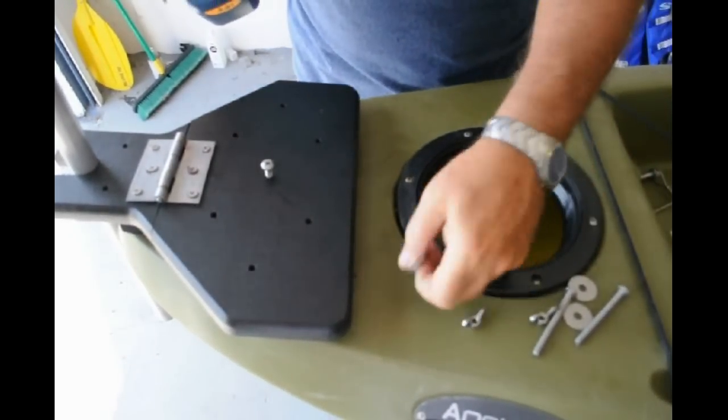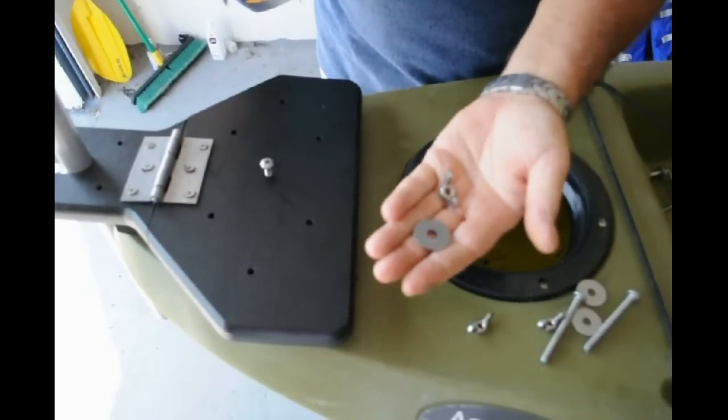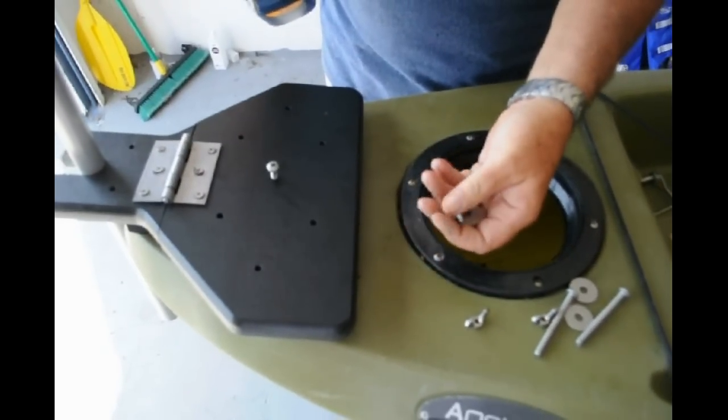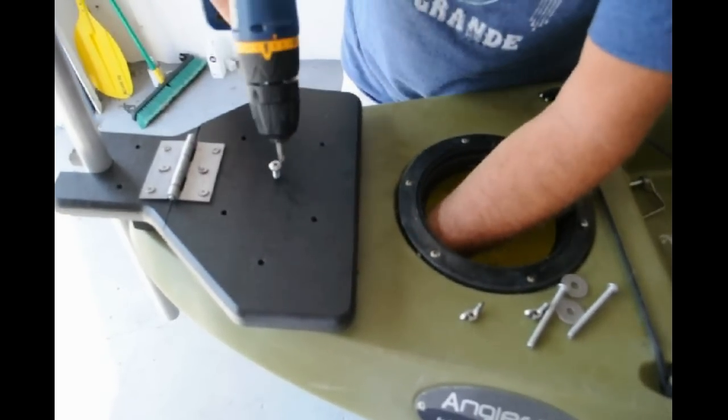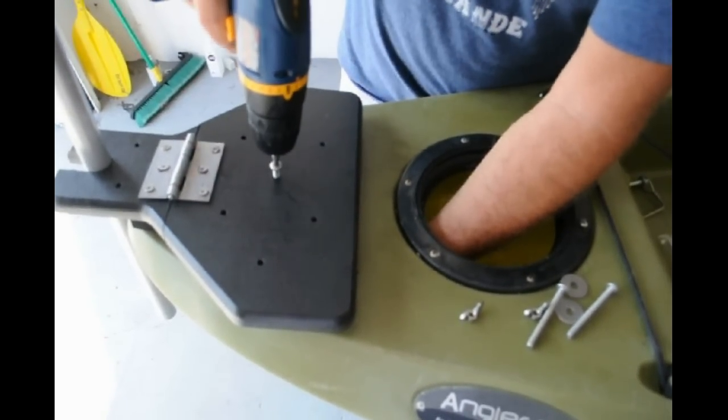And then we're going to just take the washer and the wing nut and place it in the back over the bolt as it goes through.